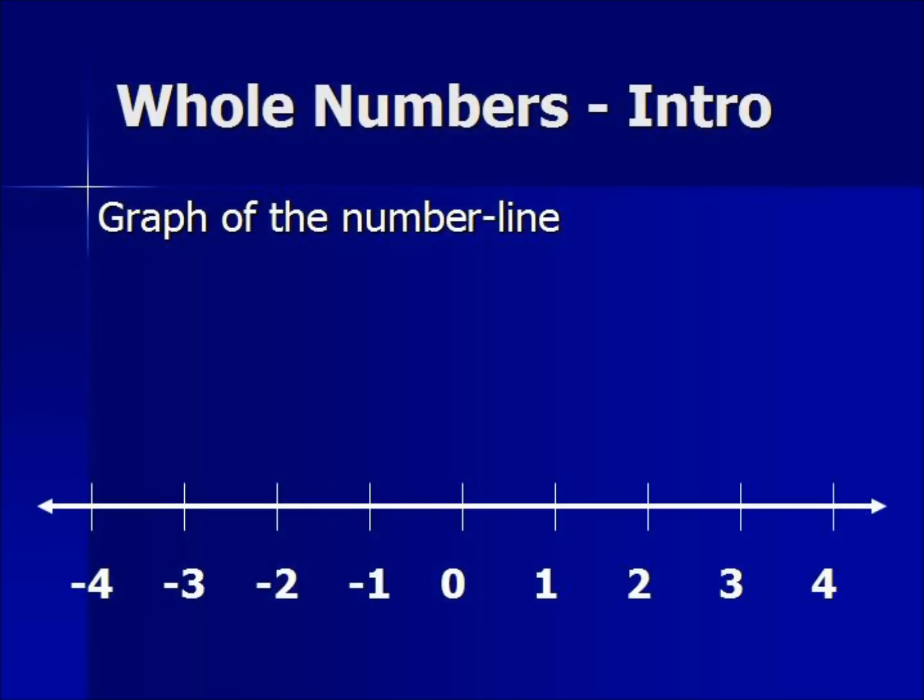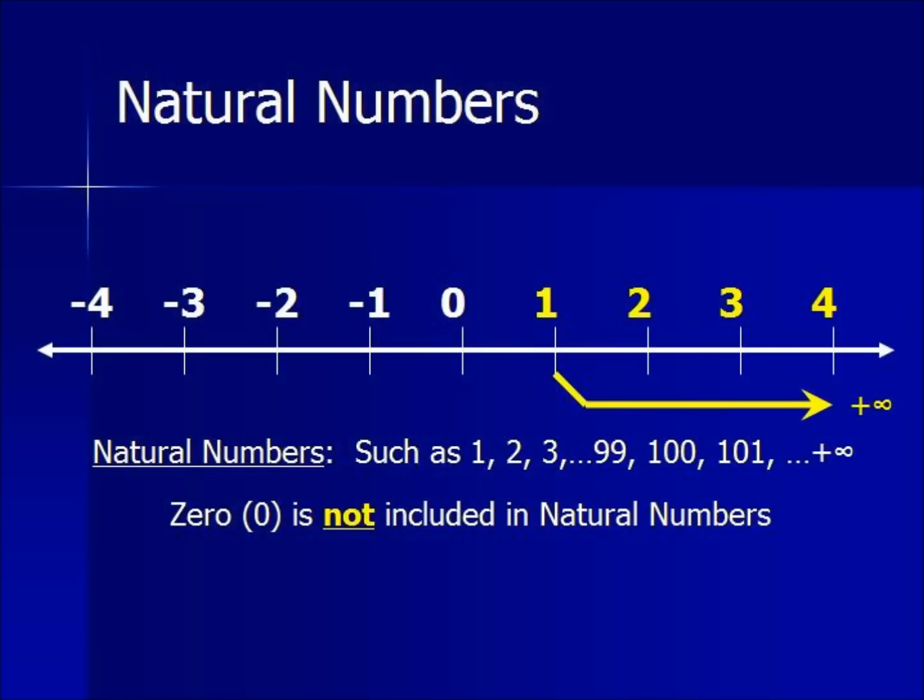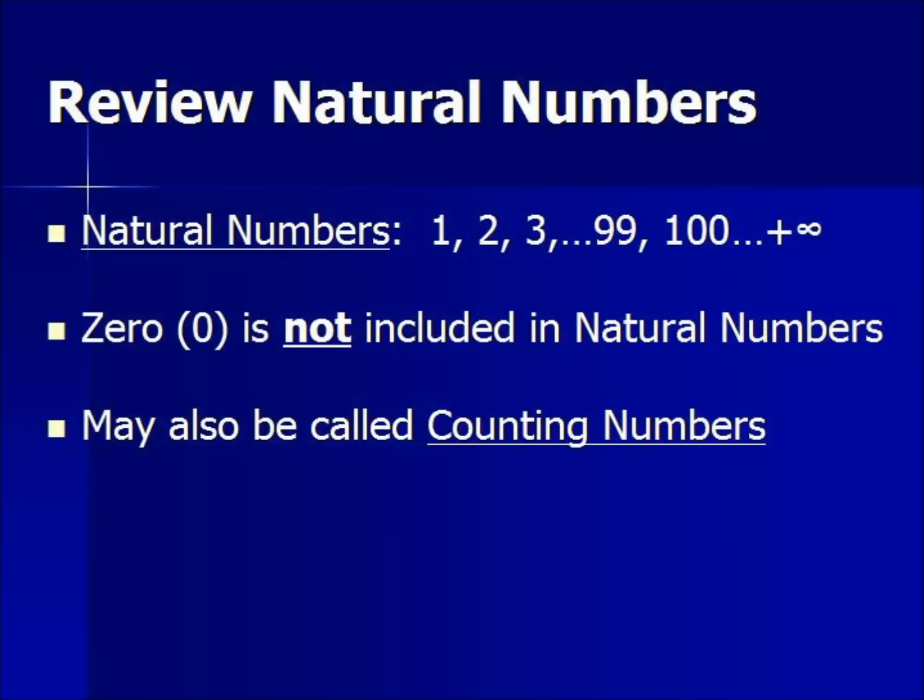We use the number line to give you a better illustration of the definitions. Natural numbers begin at 1 and stretch all the way to positive infinity. Natural numbers do not include the number 0. They may also be called counting numbers.